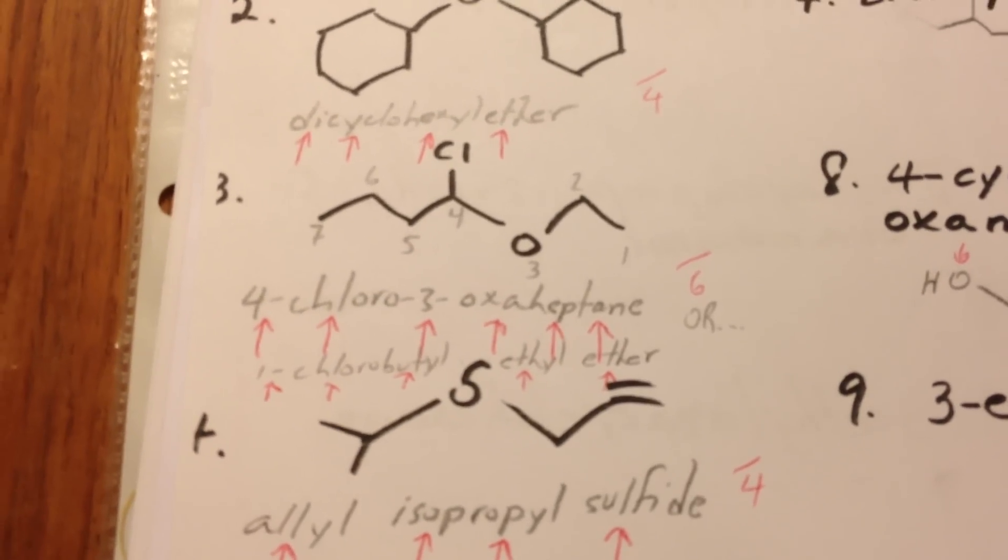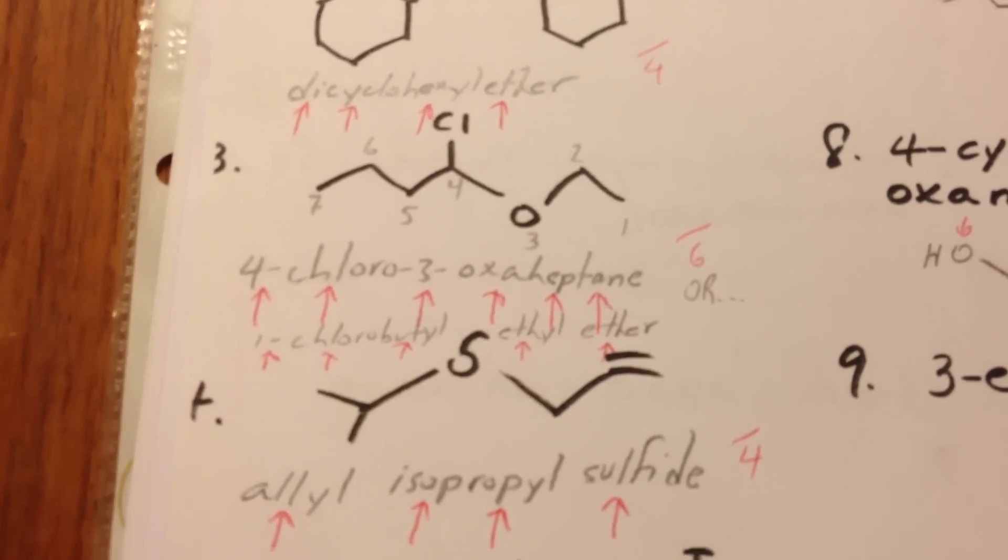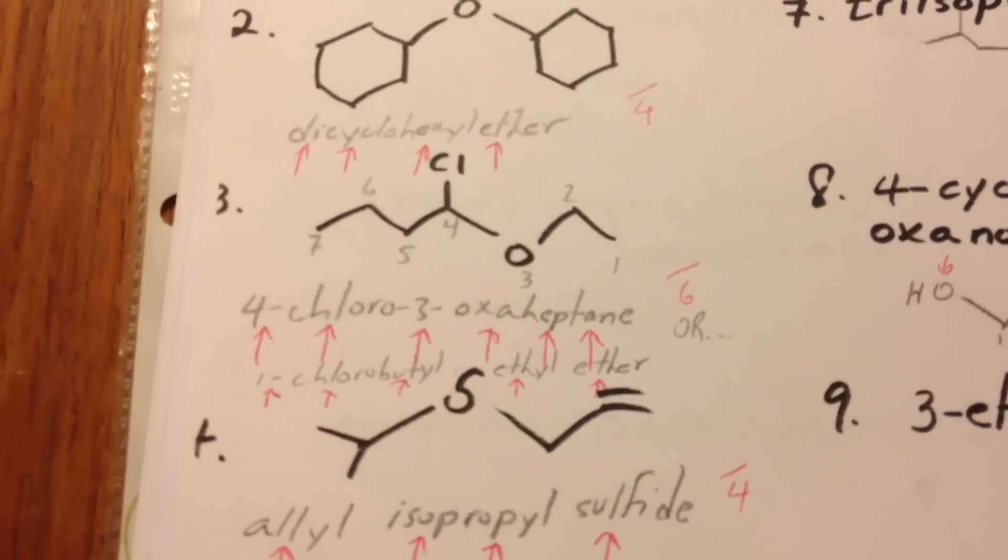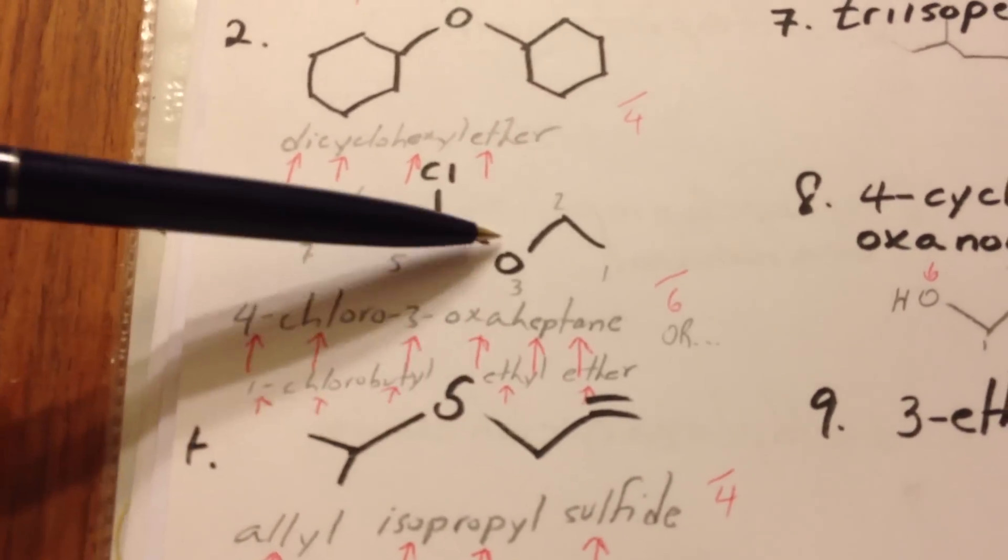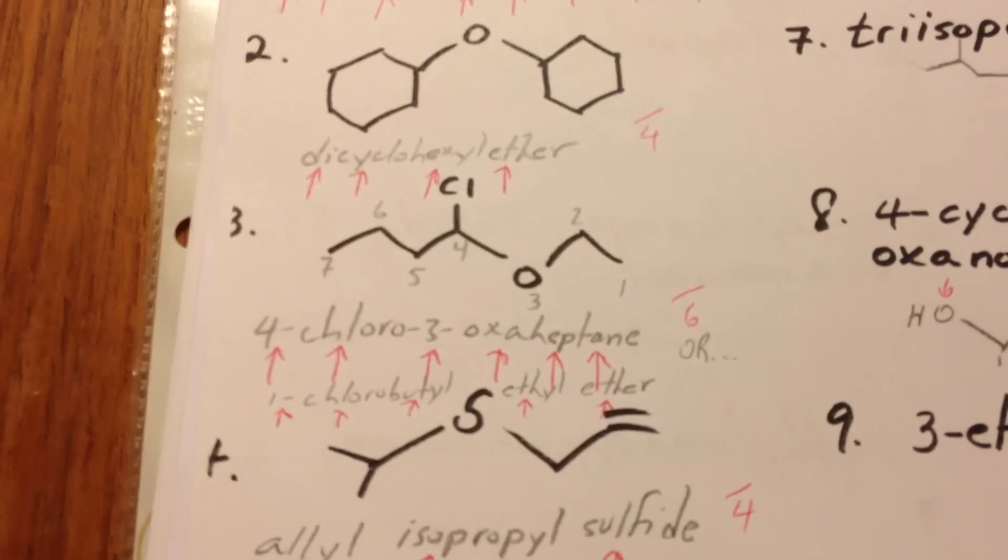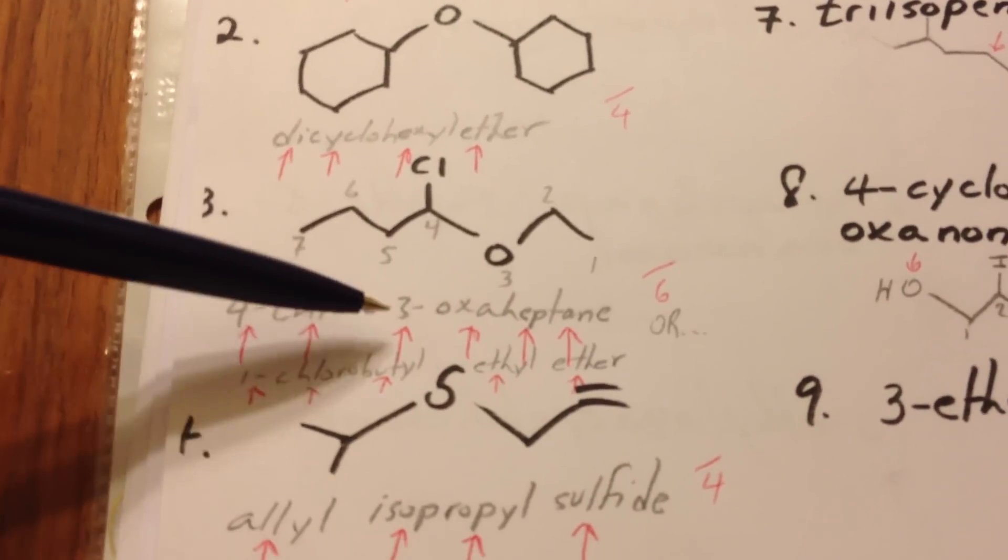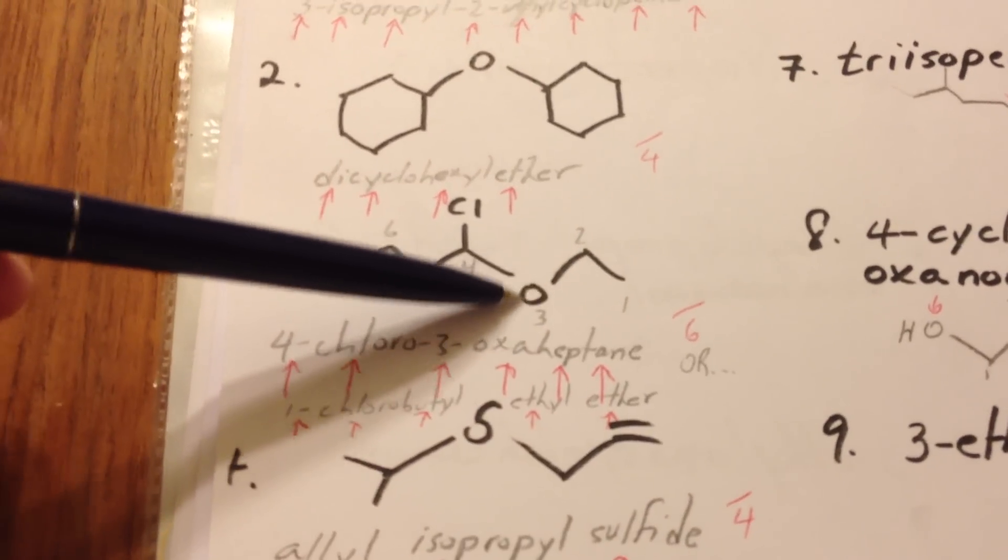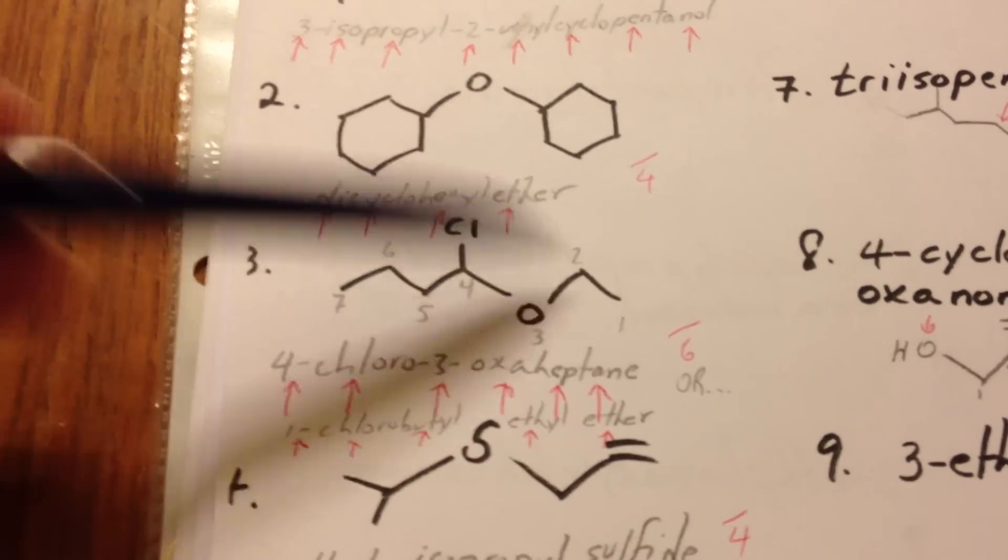Oxo is the prefix that's used for naming ketones when they are of lower priority than something else in the same molecule. But when you have oxa, then it's one of the ways of naming an ether. So we call this 4-chloro-3-oxaheptane. And notice how we count the oxygen atom as though it were a carbon. We include it in the chain.